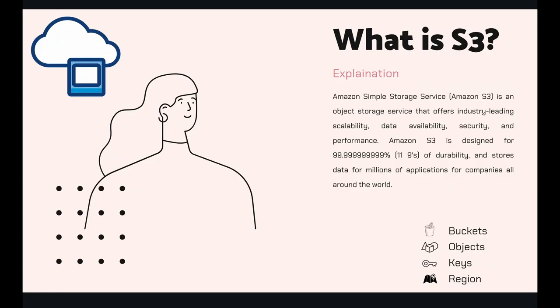There are certain things to keep in mind while using S3. First is buckets — a bucket is simply a container where you store all your data. The data stored inside S3 is referred to as objects. So any entity, data type, or file you store inside S3 will be called an object.